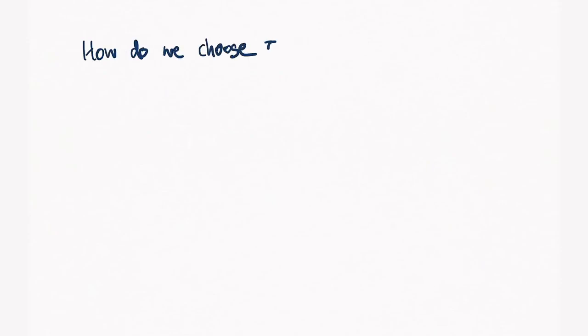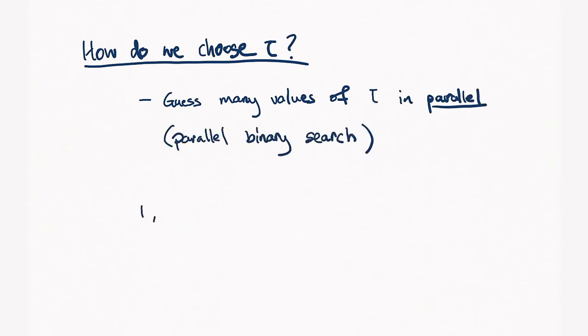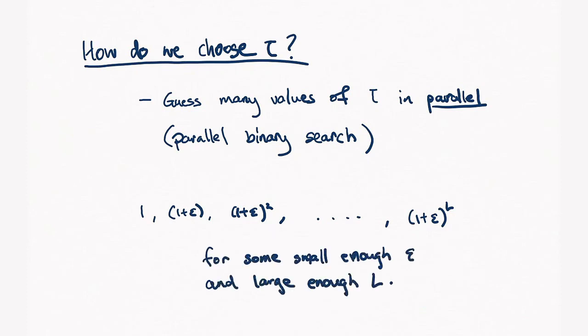How do we actually choose the right value of tau? Well, we don't need to choose the right value. We can just guess many values of tau in parallel. And the way we'll space out these guesses is exponentially. So, for some small enough epsilon and L, we can choose the guesses 1, 1 plus epsilon, (1 plus epsilon)², up to (1 plus epsilon)^L. And we show some choice of epsilon and L which works as long as epsilon is small enough and L is large enough.